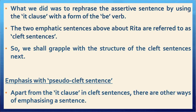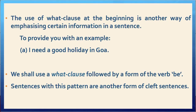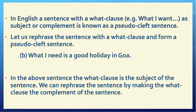Apart from the it clause in cleft sentences, there are other ways of emphasising a sentence. The use of a what clause at the beginning is another way of emphasising certain information. For example, take the sentence: I need a good holiday in Goa. We shall use a what clause followed by a form of the verb be. In English, a sentence with a what clause — for example, what I want — used as a subject or complement is known as a pseudo-cleft sentence.